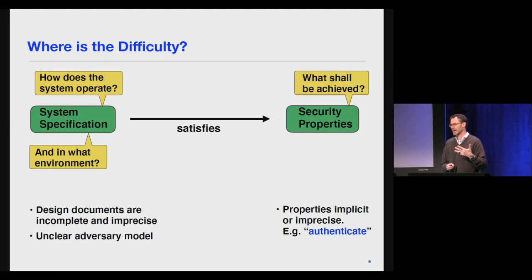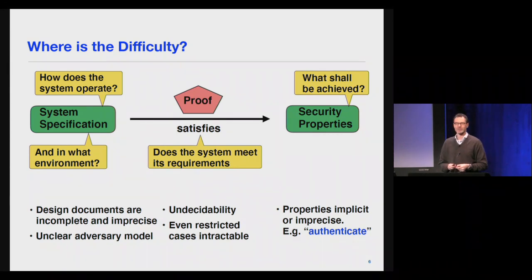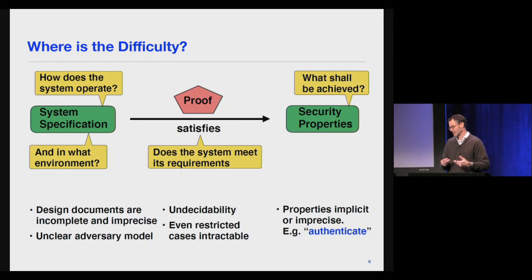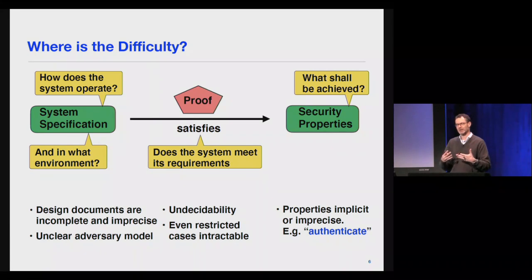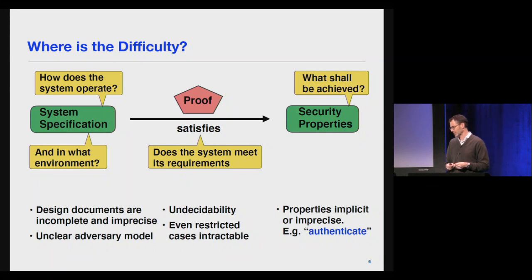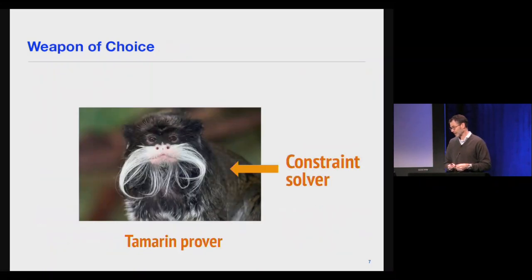Another problem involves security properties: what shall be achieved? Properties are often implicit or imprecise — for example, 'authenticate': what does that really mean? There are various ways to make that precise. And finally, the notion of satisfaction: does a system meet its requirements? Ideally we have machine-checked proof, because humans can make mistakes. We're up against undecidability: even for very simple classes of protocols, basic properties like whether a key is secret are undecidable.